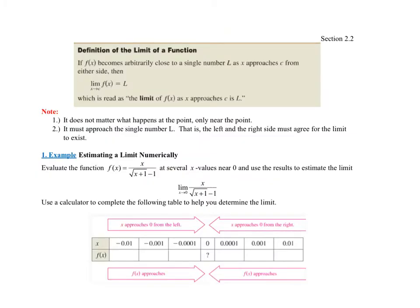Let's go into the formal definition of a limit of a function. It says if f of x becomes arbitrarily close to a single number L — in the previous example it was the number 3, y approached 3 — as x approaches c, in the previous case as x approaches 1, from either side, then the limit as x approaches c of f of x equals L. This is read as: the limit of f of x as x approaches c is L.